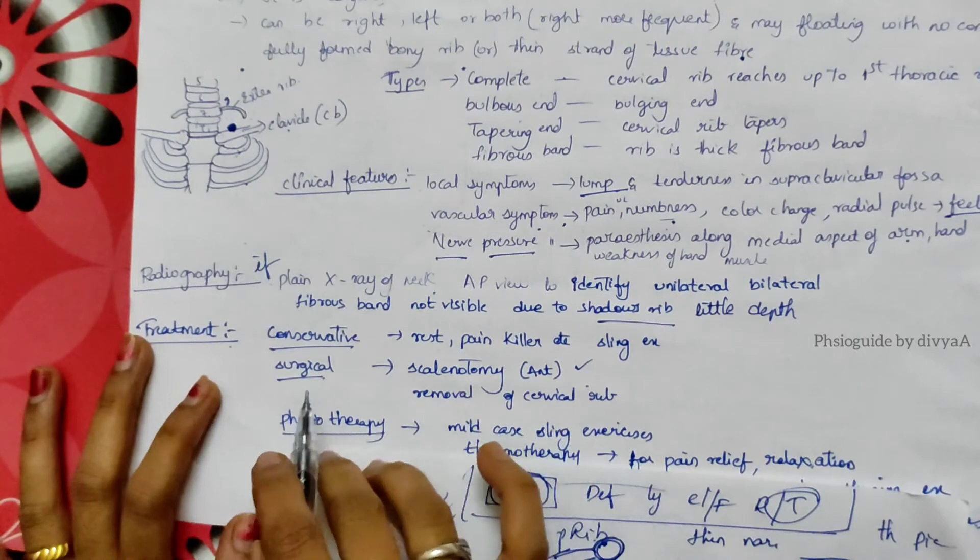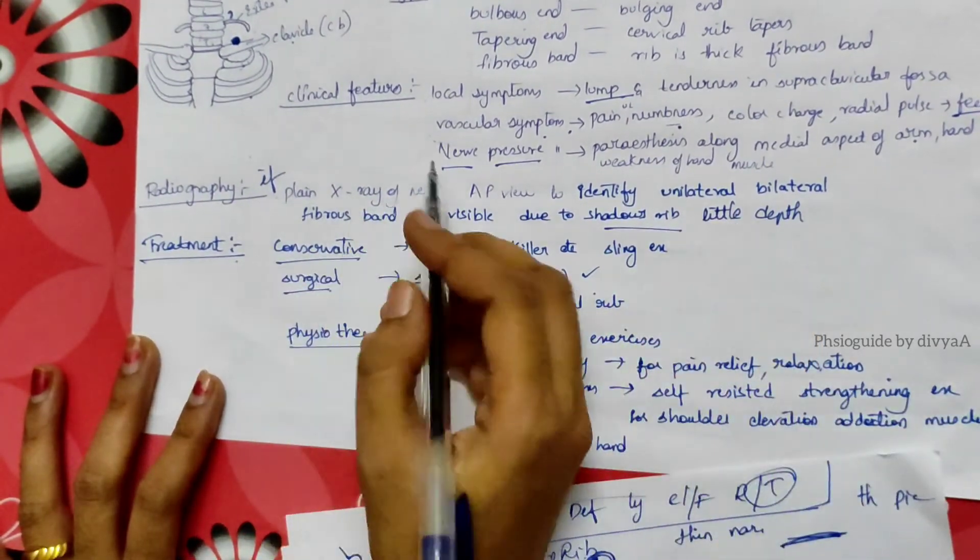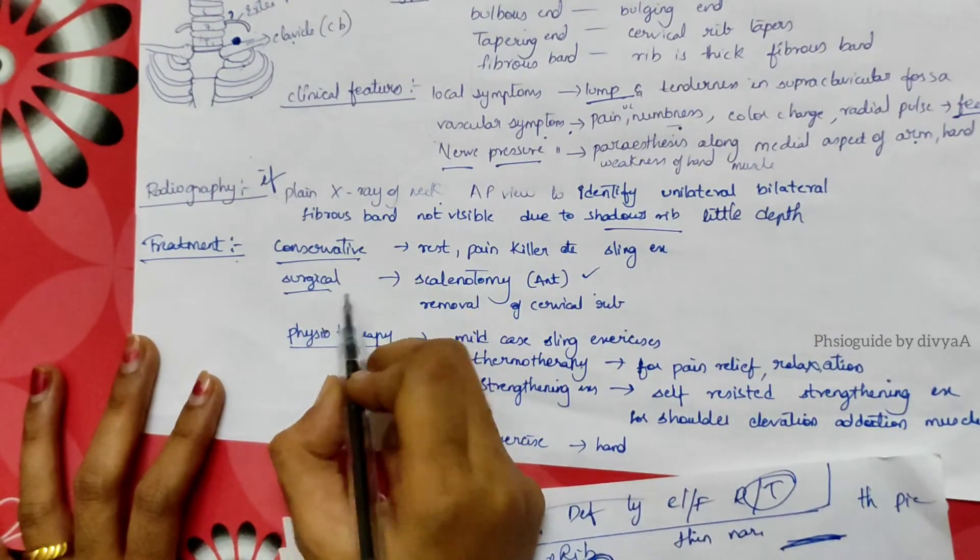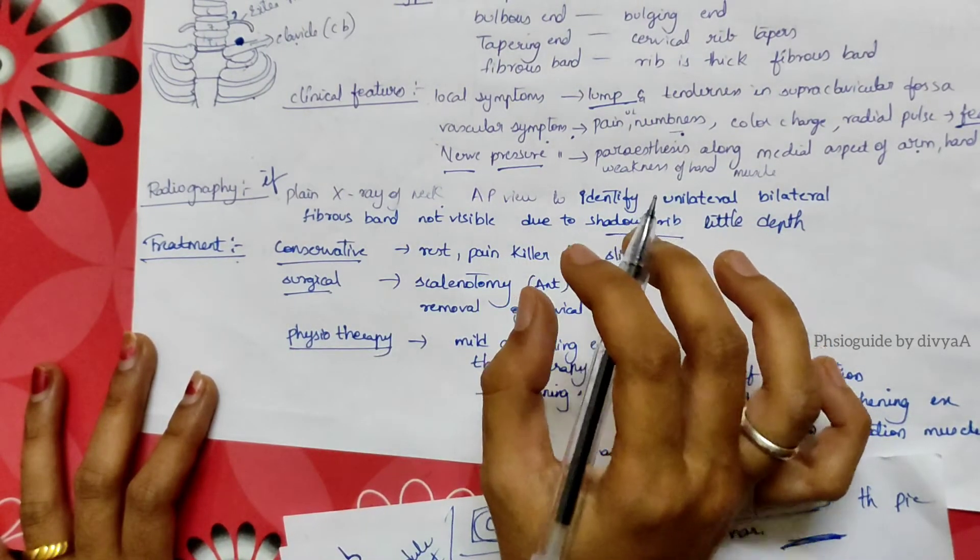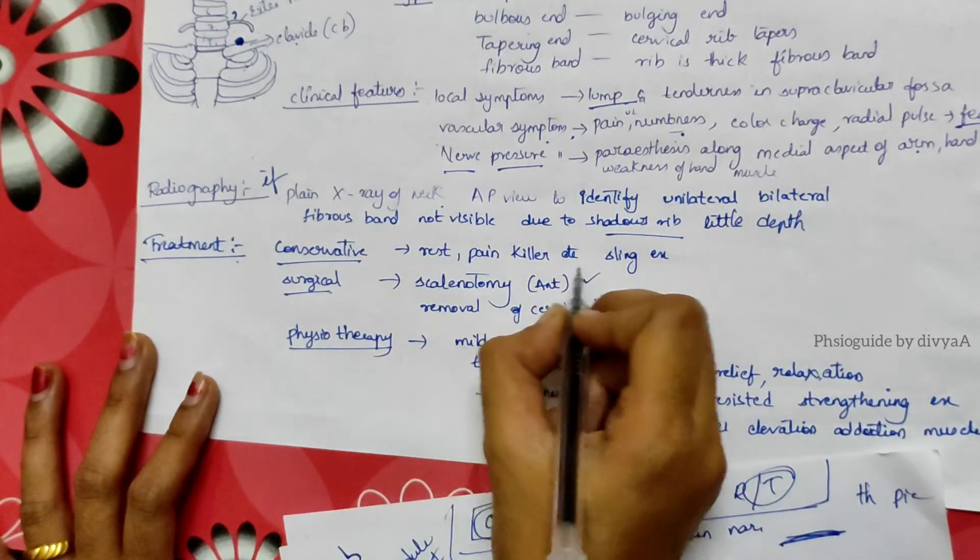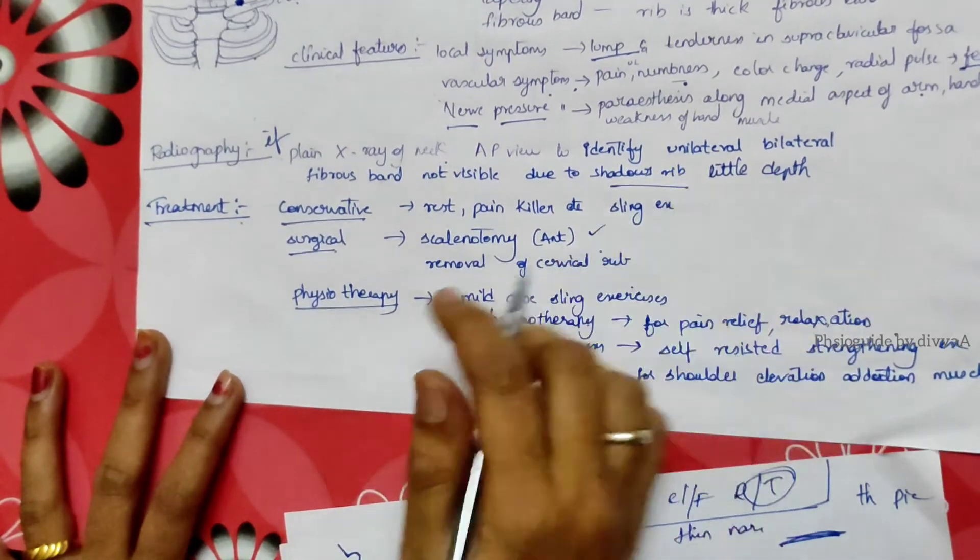Treatment: we're going to see three types - conservative, surgical, and physiotherapy management. First method is conservative: rest, painkiller tablets, and physiotherapy.